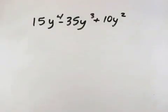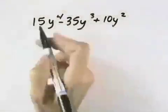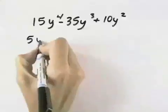In order to factor this polynomial completely, we first want to take out the greatest common factor between these, which is 5y².